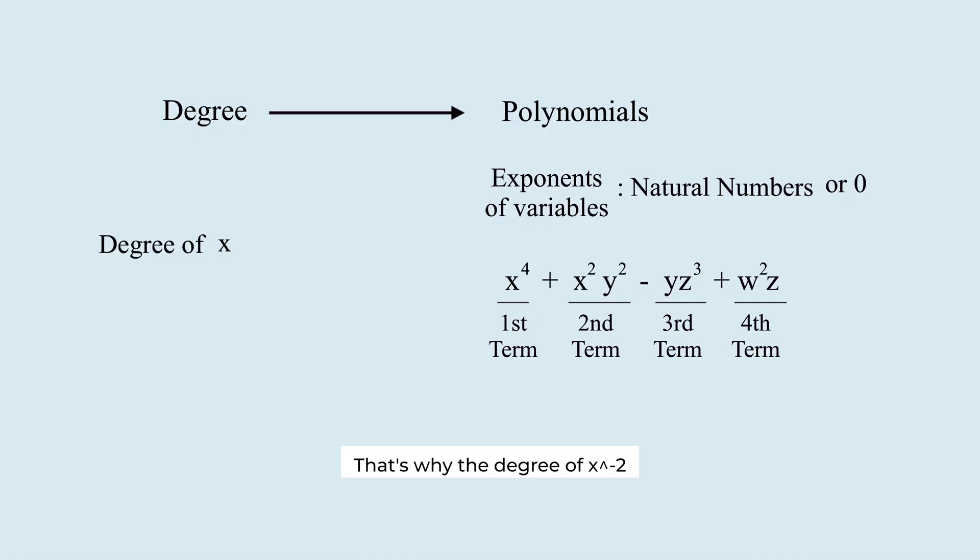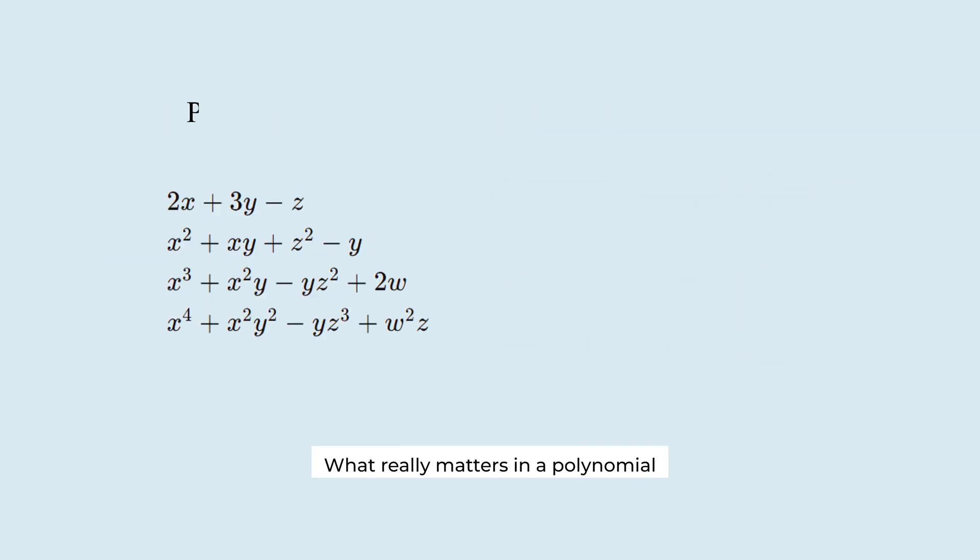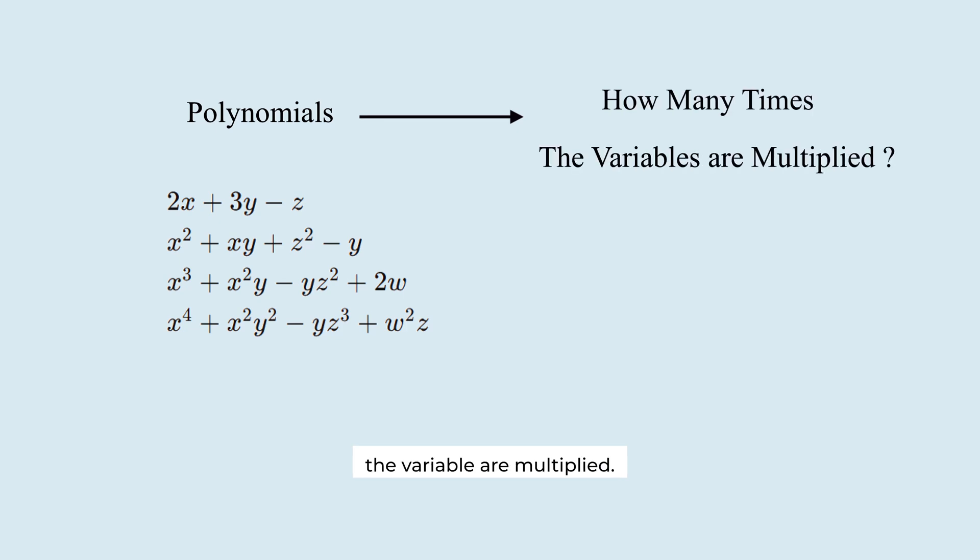That's why the degree of x to the power minus 2 is undefined. A negative exponent makes it a rational expression, not a polynomial. What really matters in a polynomial is how many times the variables are multiplied. That count determines the polynomial scale or power. That's the degree.